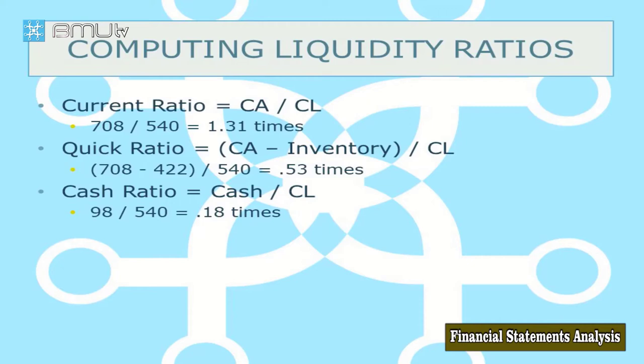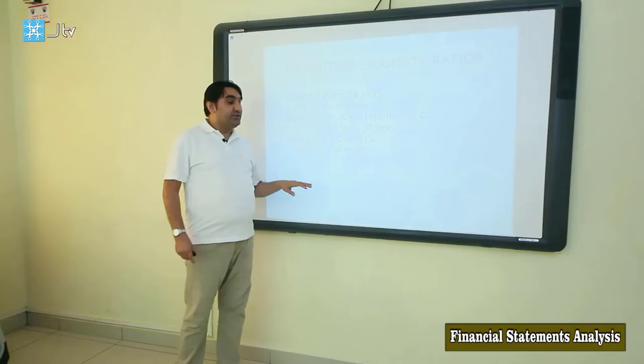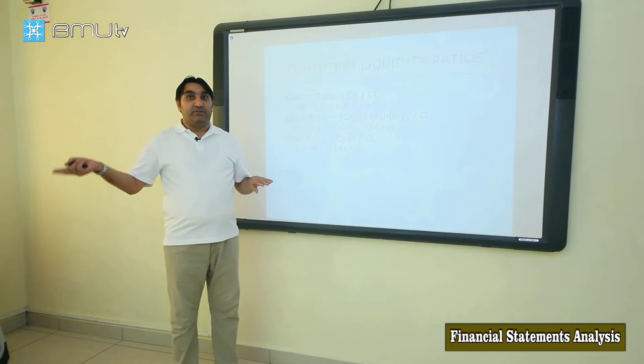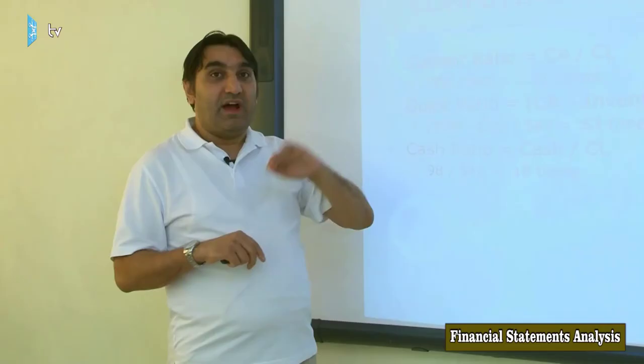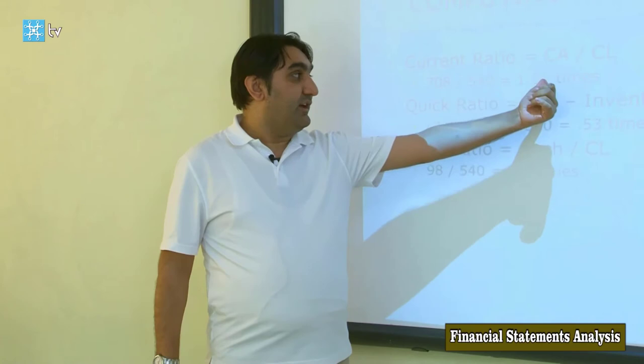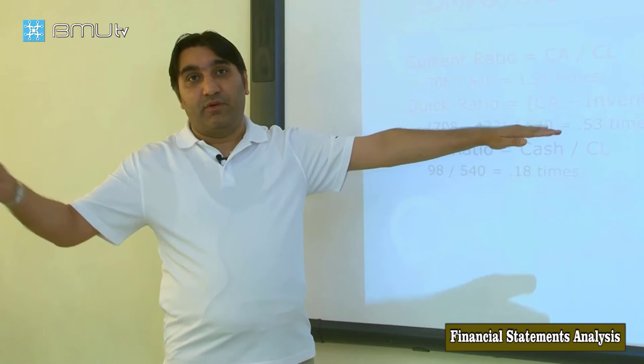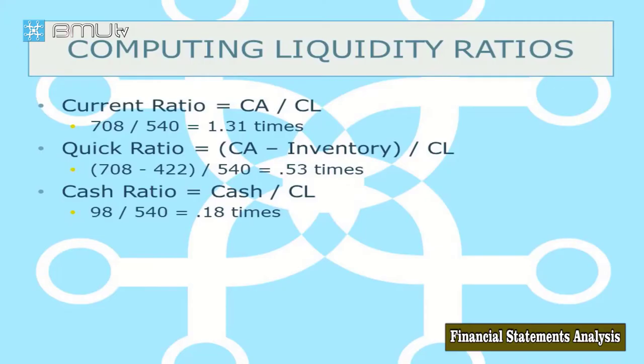We need to compare the current ratio with how peer companies perform — what the average current ratio is in the industry. We also need to look at the historical information of the same company to see how our current ratio has developed. For example, 1.3 times is for 2017 — how was it last year, or two or three years before? We need to go back as far as we can to see the dynamics of how it has changed, and compare with the industry average.